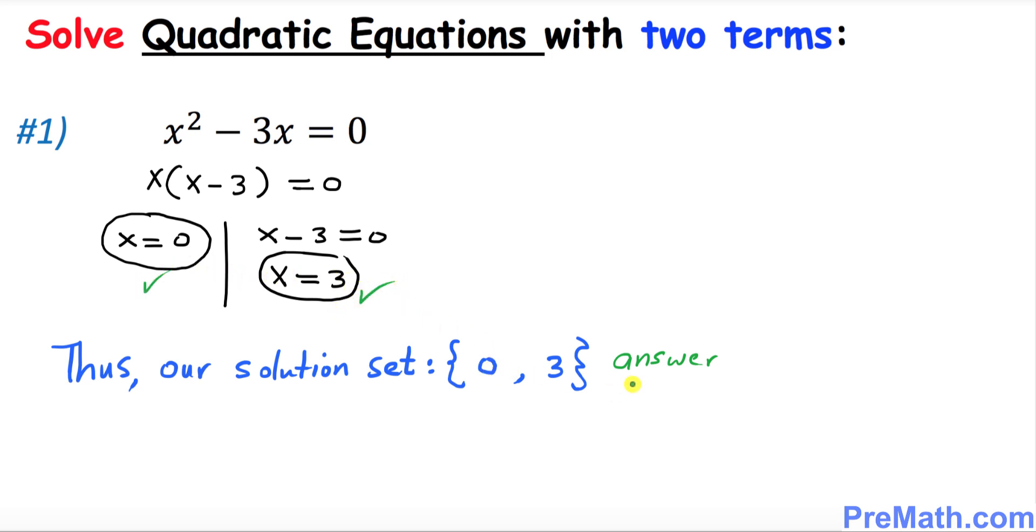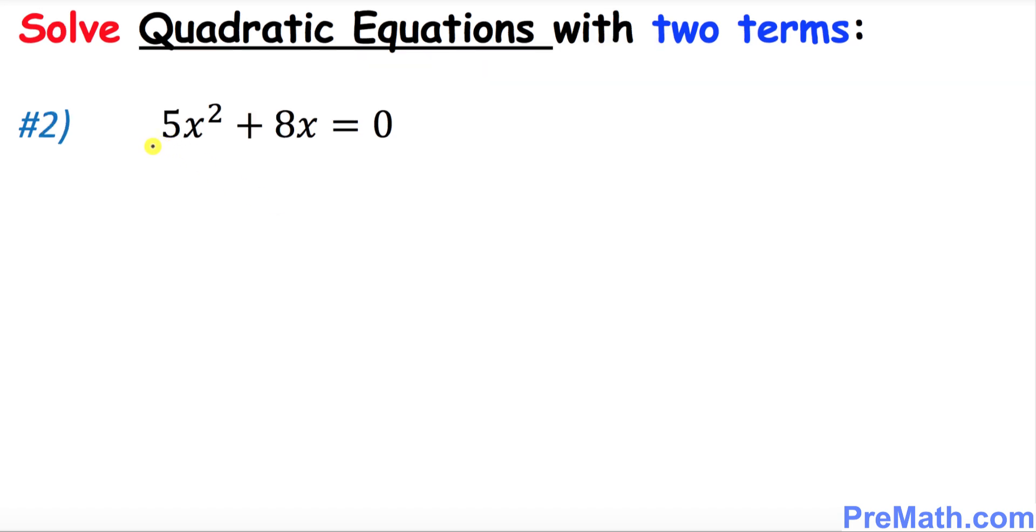Thus our solution set turns out to be x = 0 and x = 3, and that is our answer. And here's our next question that we want to solve for x.